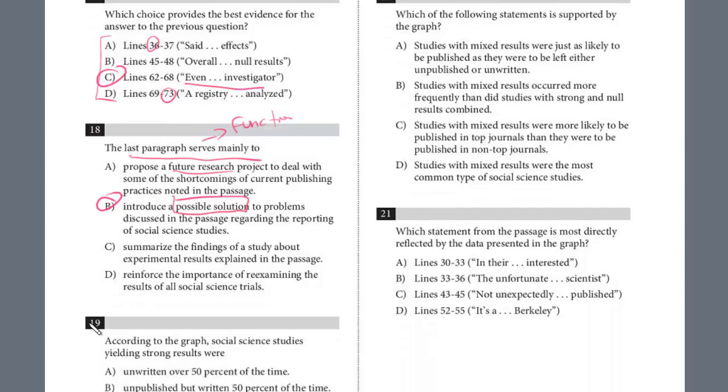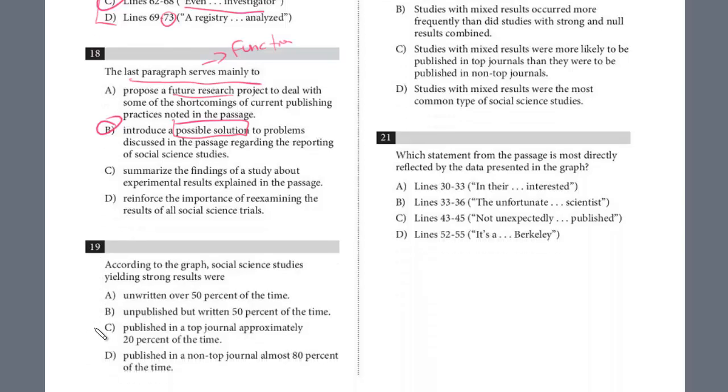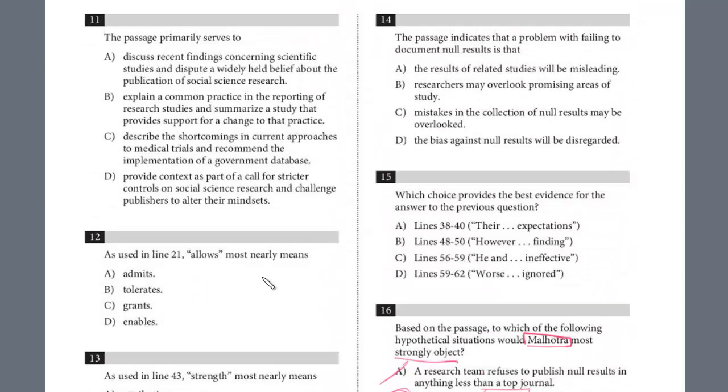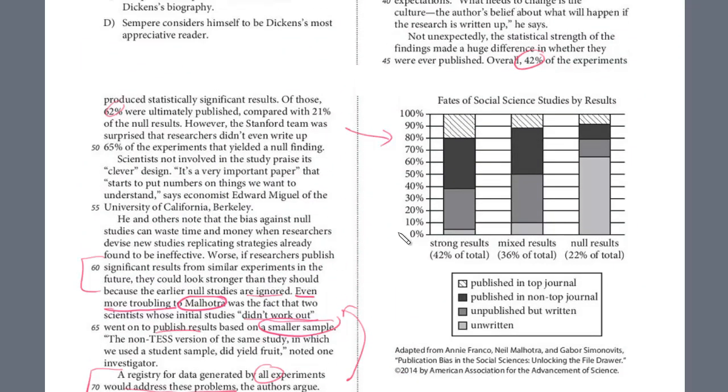And then we have three questions on the graph. You'll see this not just in the reading but the writing section as well. According to the graph, social science studies yielding strong results were what? So we have to pay attention. We want this science, social science studies with strong results.